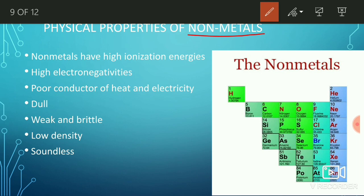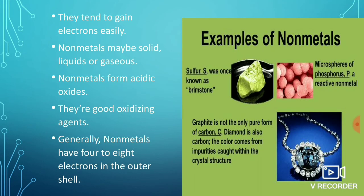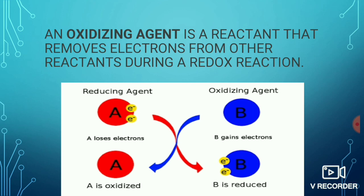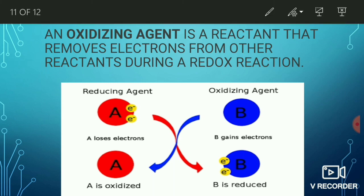In the periodic table, these are the non-metals. Non-metals tend to gain electrons easily and may be solid, liquid, or gas. Non-metals form acidic oxides. They are good oxidizing agents — an oxidizing agent is a reactant that removes electrons from other reactants during a redox reaction.